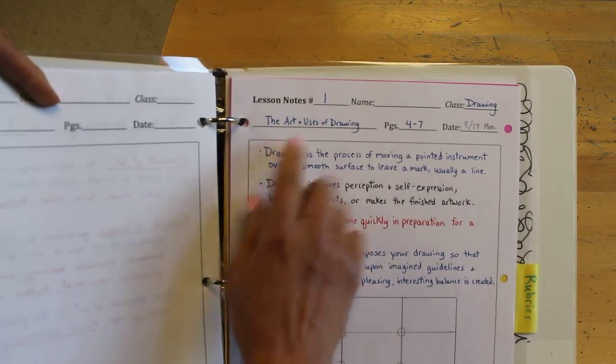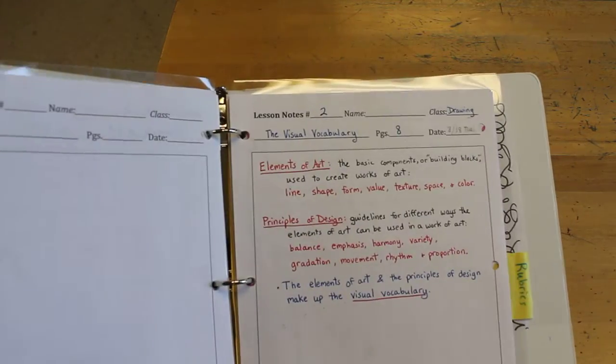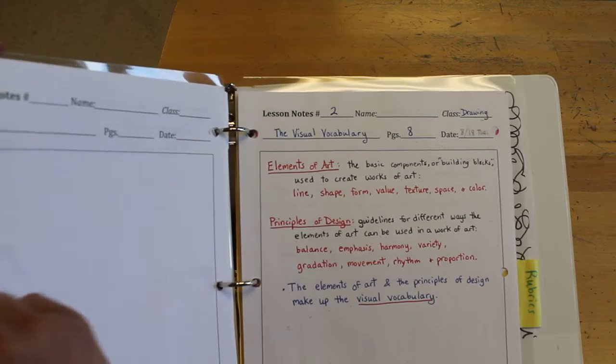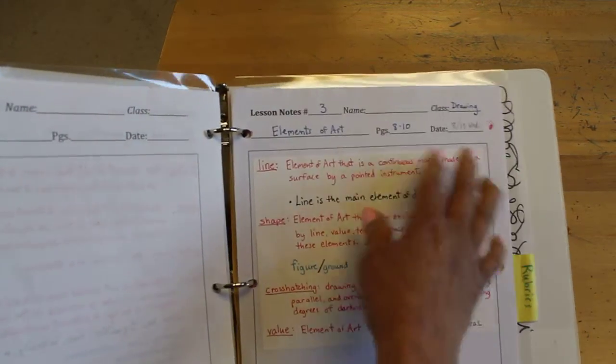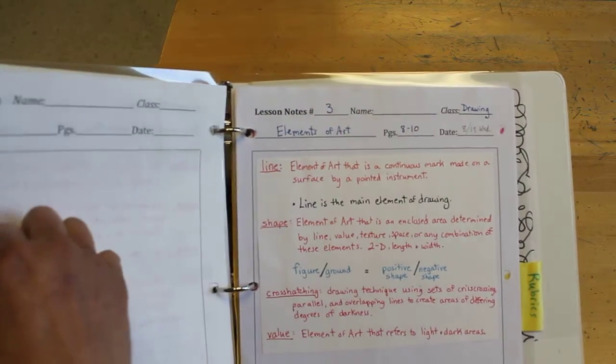So we have lesson notes one art and uses of drawing. Of course this is chapter one from early on. I'll just flip through them kind of fast. There's number two the visual vocabulary. Of course the date and your name should be up here and all information should be filled out at the top.